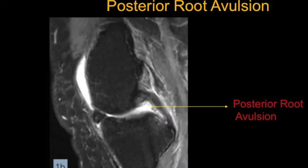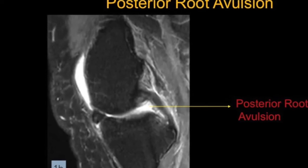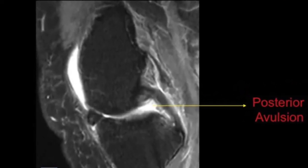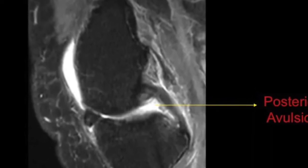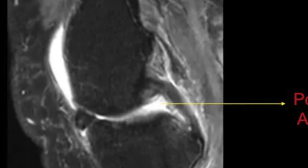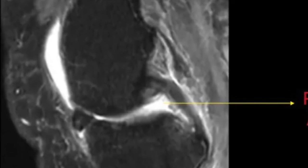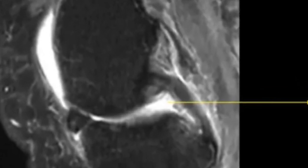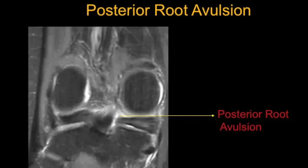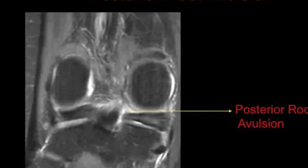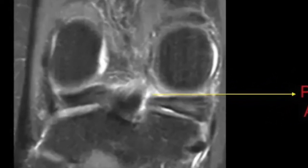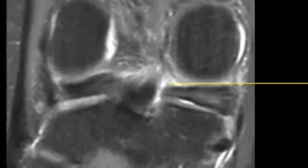Root tears are classically seen in the posterior horn, very common in the medial meniscus. In a posterior root avulsion, the region of the root — which is supposed to lie exactly anterior to the tibial end of the PCL — is empty. When seen in the coronal view, we see the gap clearly, as shown in these coronal PD fat-sat images.